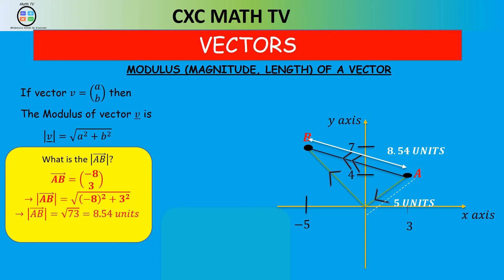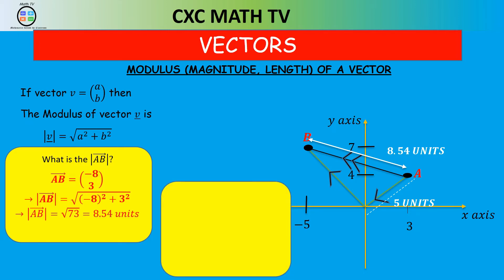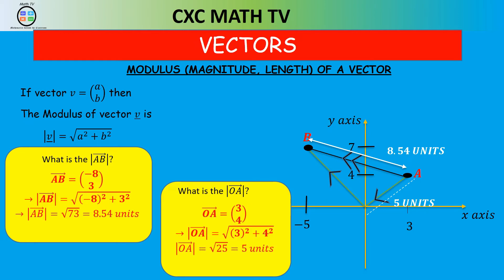Your turn: what is the magnitude of vector OA? Pause and attempt. OA was (3, 4), so the magnitude of OA is √(3² + 4²) = √(9 + 16) = √25 = 5 units.